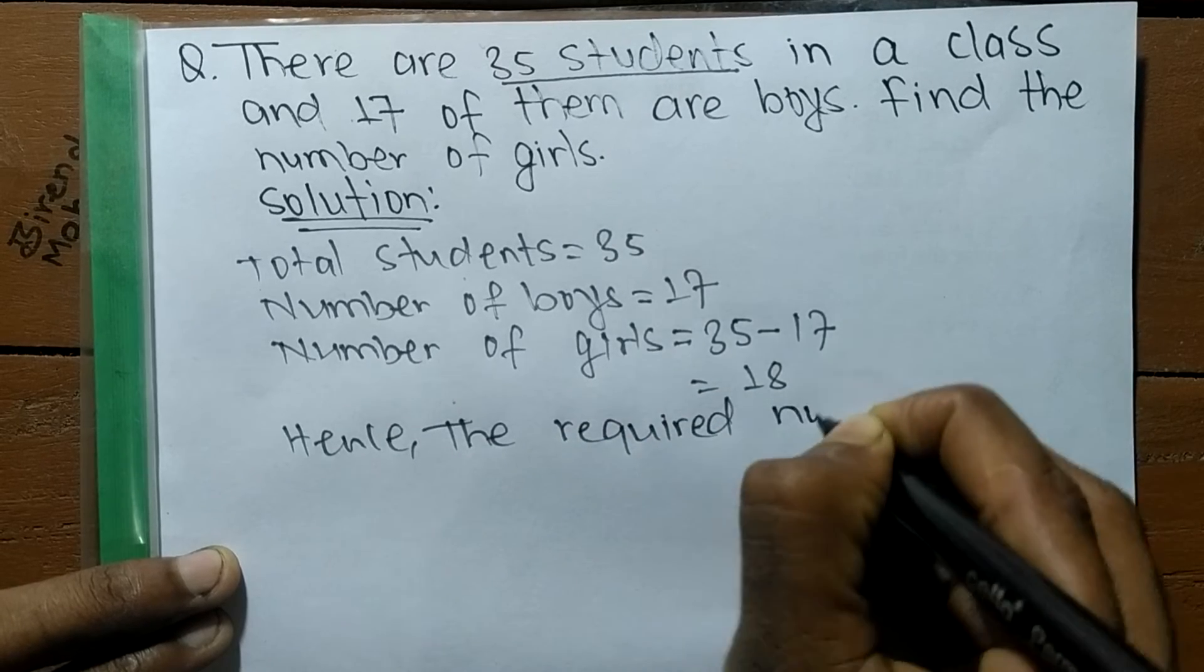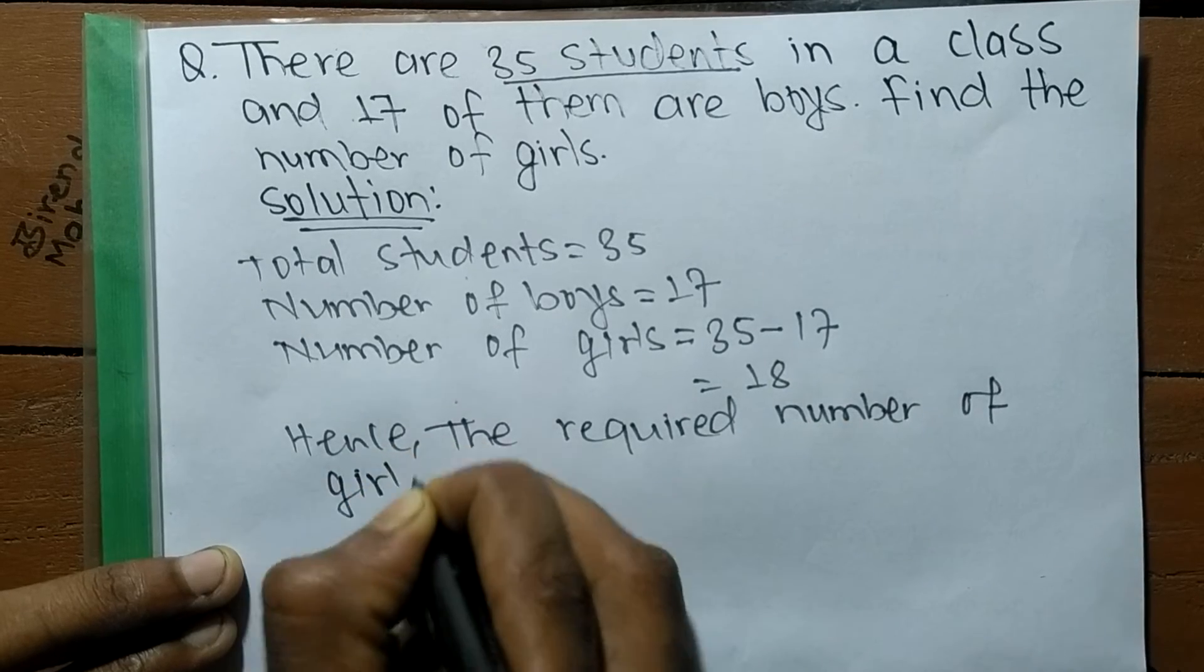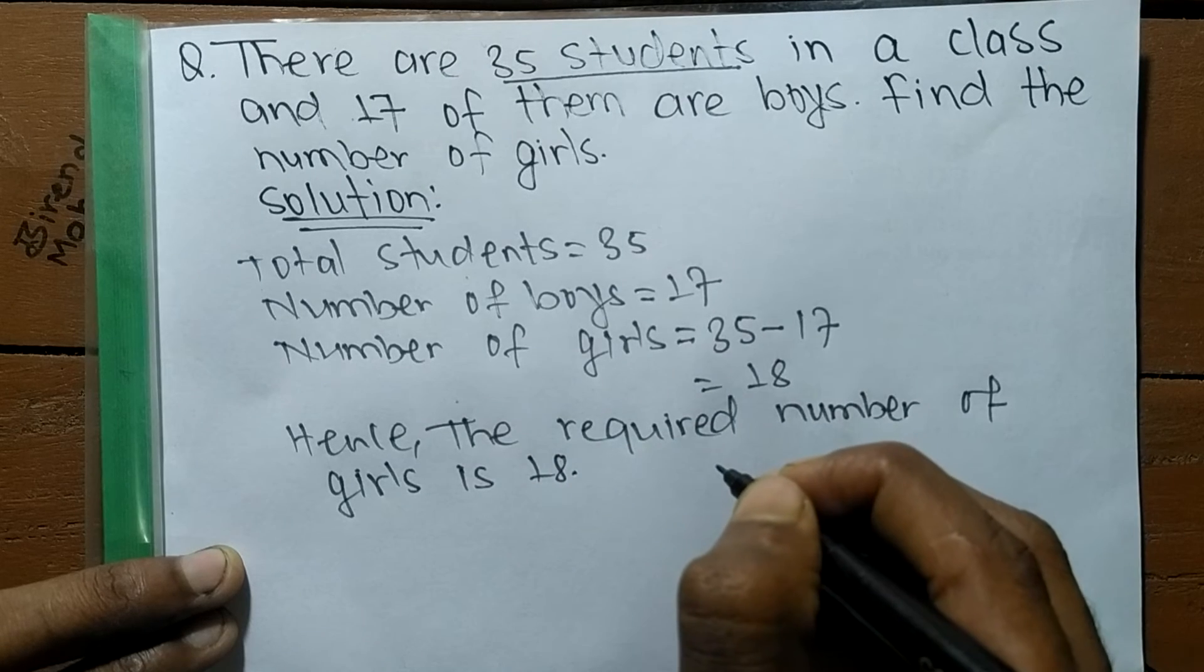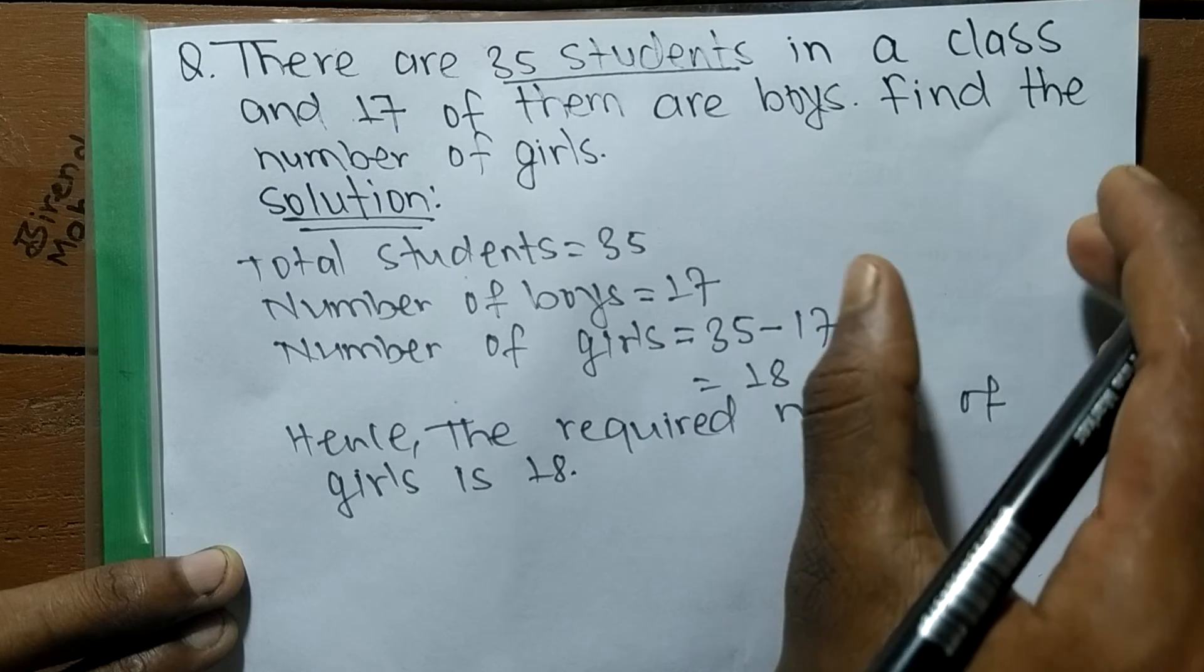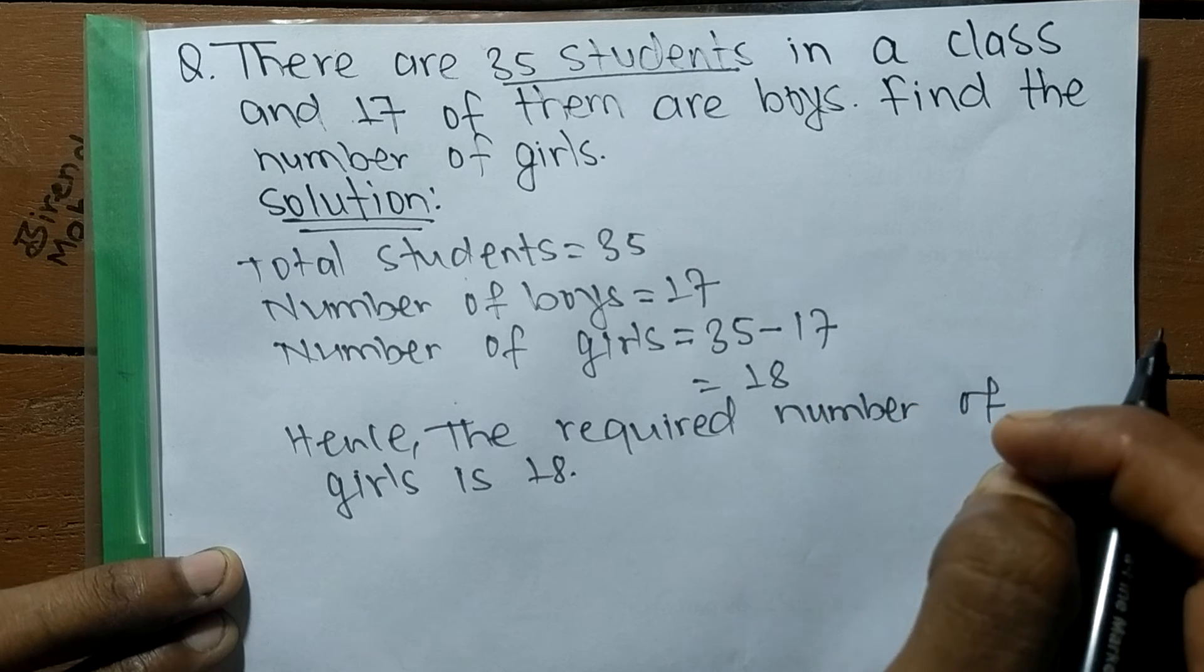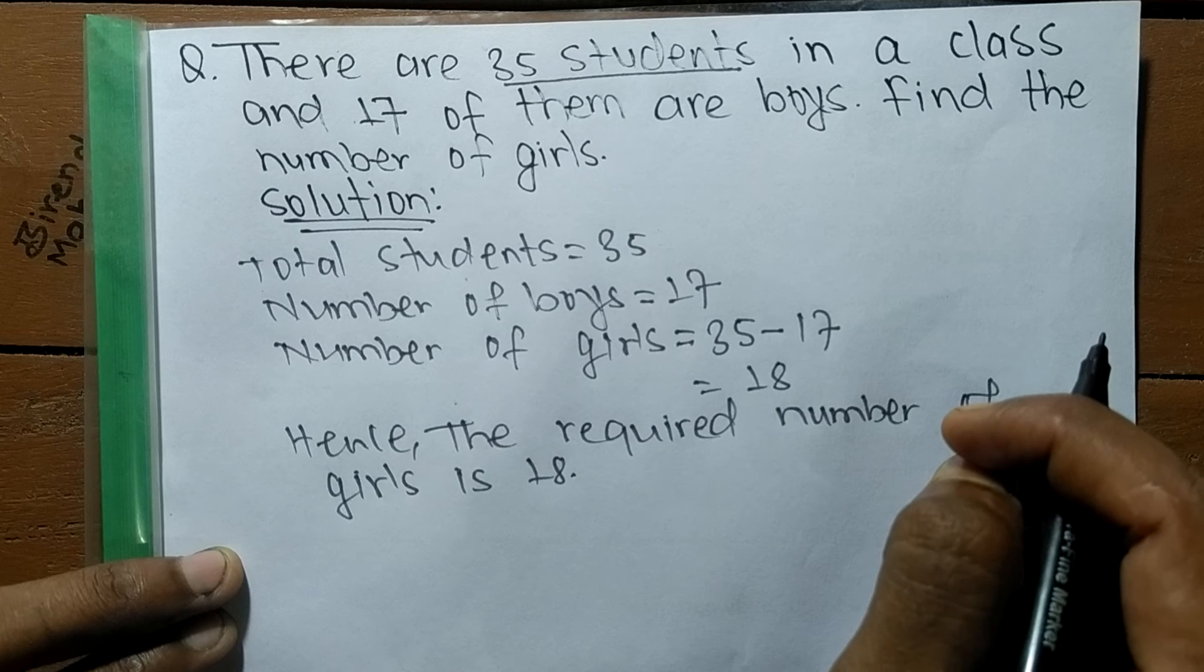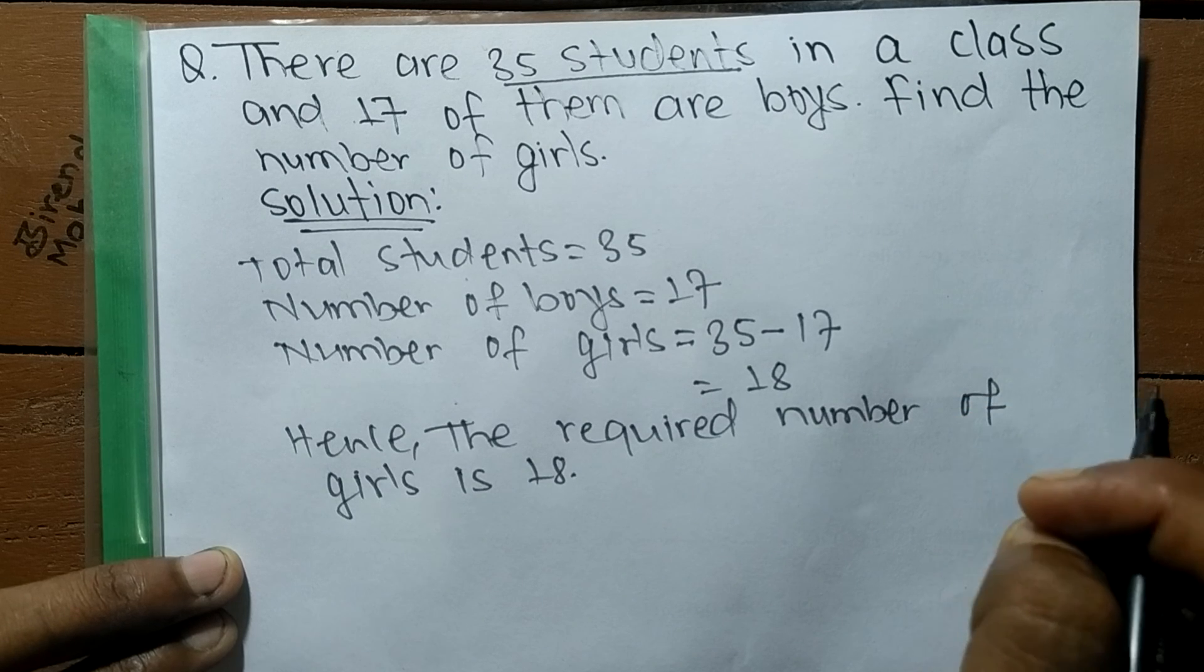So in this way we can solve a problem related to total students where one quantity is given and another quantity is remaining. This is all for today. If you have any problem regarding math, then just comment your question in the comment below and we shall provide a video solution of your question. Thank you.